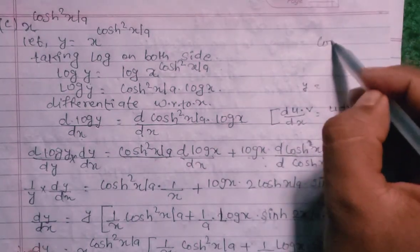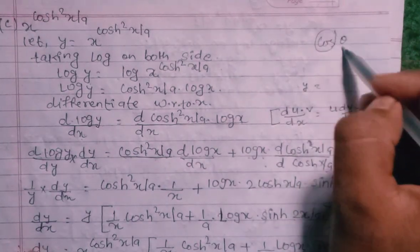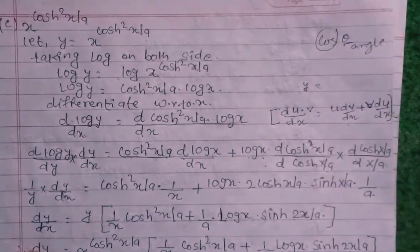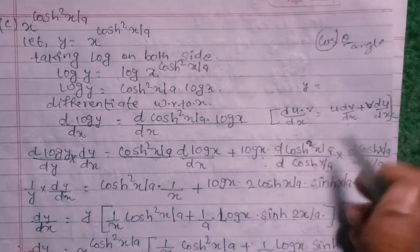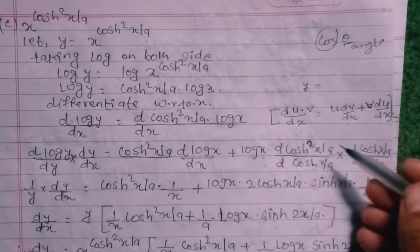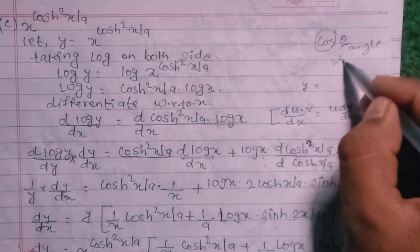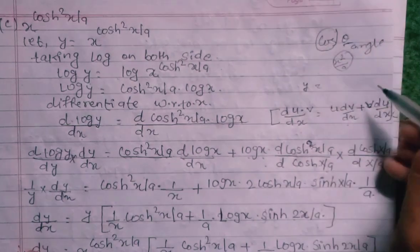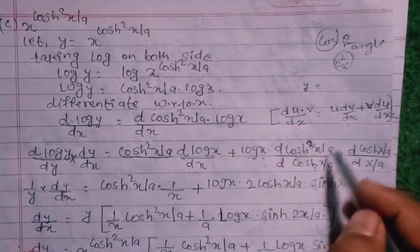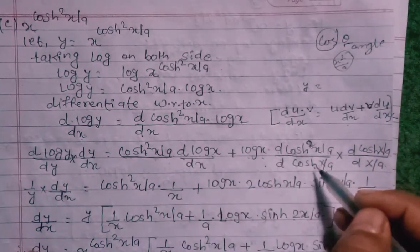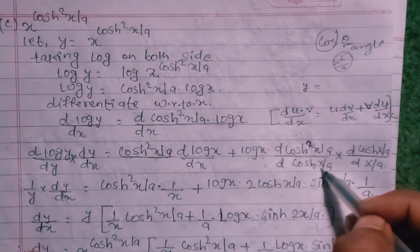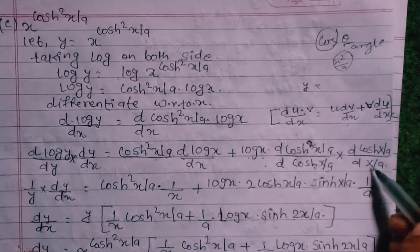Plus log x times cos(x/a). The derivative of cos(x/a) with respect to x gives minus sin(x/a) times d(x/a)/dx. So x/a into d(x/a)/dx gives 1/a. And so x/a into d.